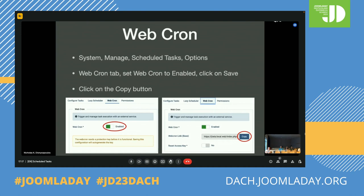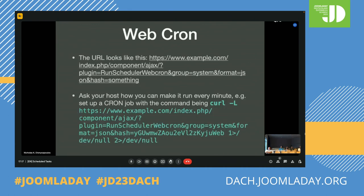To use this method, go to System > Manage > Scheduled Tasks > Options, go to the Web Cron tab, enable it, click Save, and you'll see a web cron link appear underneath the toggle. Click Copy and you get a URL — it looks something like a URL using com_ajax. Then just ask your host how to run this every minute, they should be able to help you, and you're done setting up web cron.